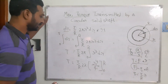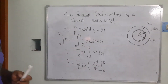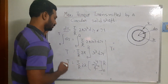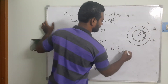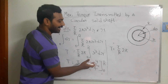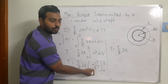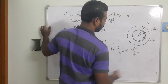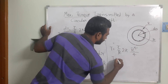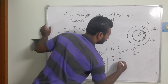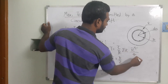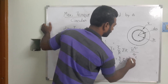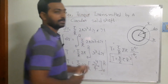Substituting the limits 0 and R, the lower limit gives zero. So T equals (τ/R)·2π·(R⁴/4). Simplifying — the 2 and 4 cancel to give 2 — and we get T equals (π/2)·τ·R³. This is the maximum torque transmitted by the shaft in terms of radius.